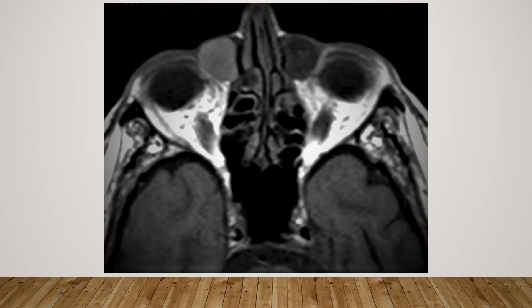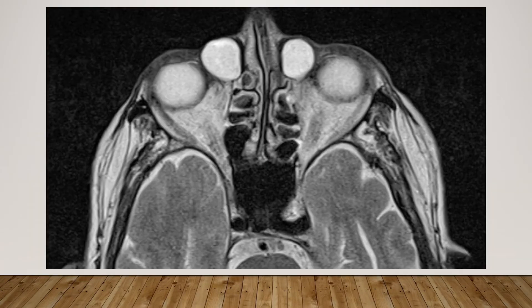Here is the T1-weighted image. As you can see, there are low signal intensity lesions near the medial canthi of both eyes. The lesion on the left is slightly more hypointense than the lesion on the right. On the T2-weighted image, the same findings are replicated — this is the hyperintense lesion on the left and this is the hyperintense lesion on the right, both situated near the medial canthi of both eyes.